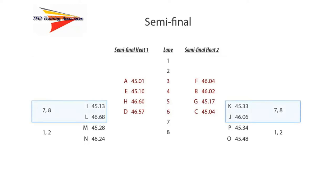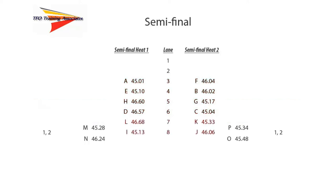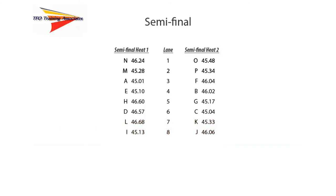Next, we conduct a random draw for lanes 7 and 8. Finally, we conduct a random draw for lanes 1 and 2. Here we see the full lane assignments for each heat. At the conclusion of the semifinals, we would repeat the same process for determining the finalists and placing them in lanes. The games committee will determine the formula for advancement to the final.